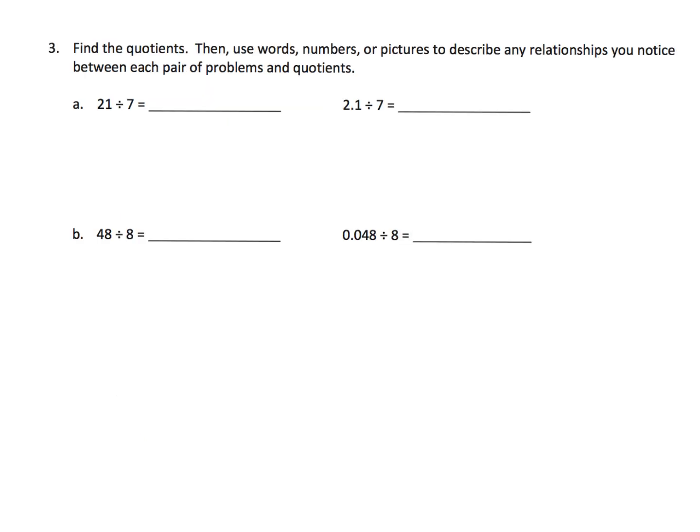Now here, it says we're going to find the quotients and then use words, numbers, or pictures to describe any relationships between this pair of problems. You've got 21 divided by 7, which hopefully our fifth graders will know that that's 3. And then over here, 2.1 divided by 7.